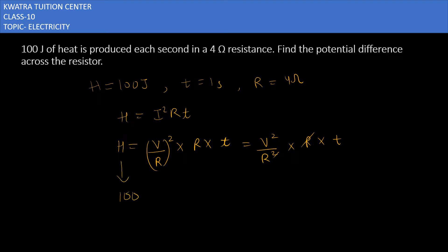Heat ki jo value hai, it is 100. V square - V ki value humare pas nahi hai. R ki value jo hai humare pas, 4 hai. Aur time kitna hai aapko, 1. Ab aap ne kya karna hai? Interchange karna hai locations. Aur aapko V ki value mil jayegi. It will be 100 into 4 is equal to V square. So it is 400 is equal to V square.